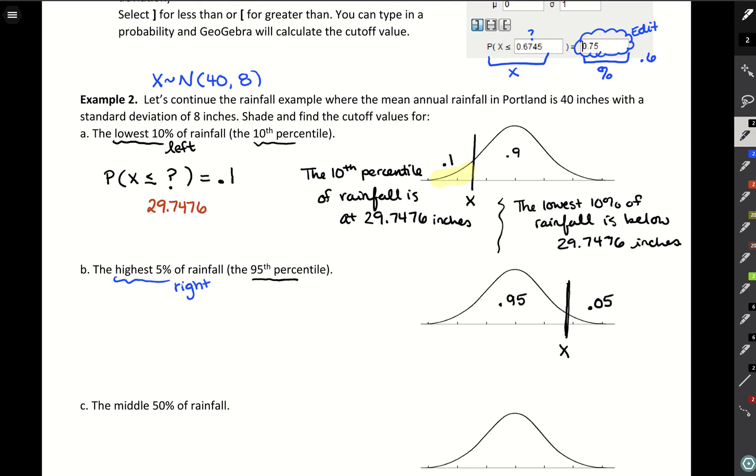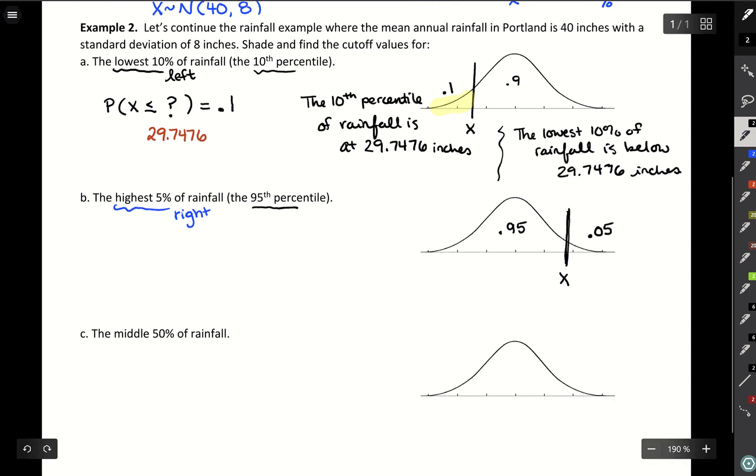But if we want to use that percentage they give us, what we're saying is the probability that X is larger than or equal to some number, there's a five percent chance of that occurring.